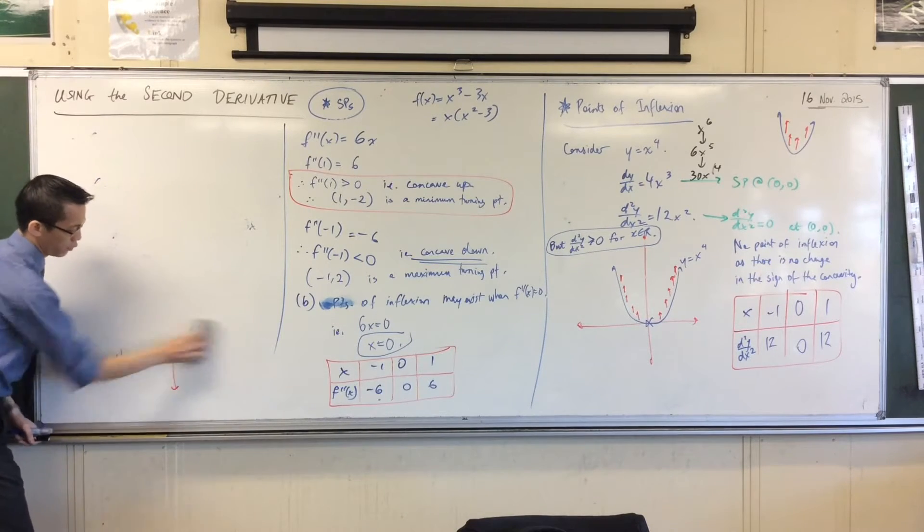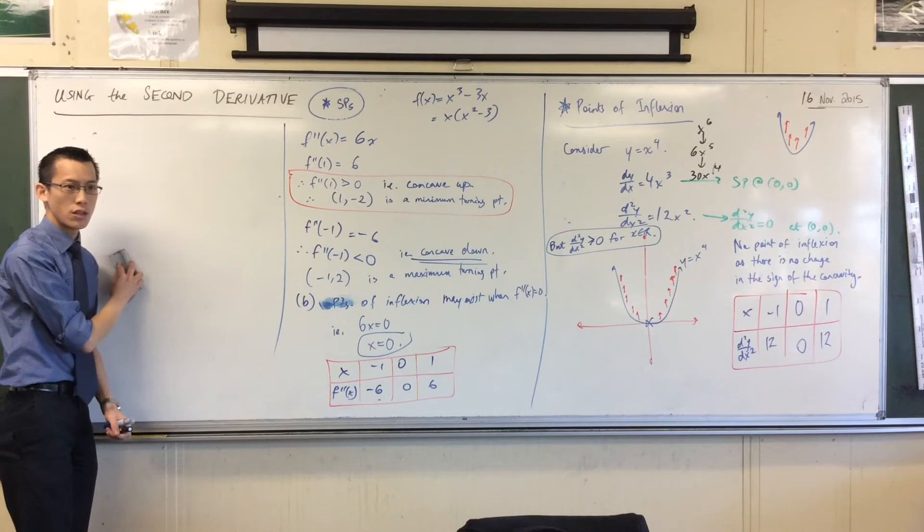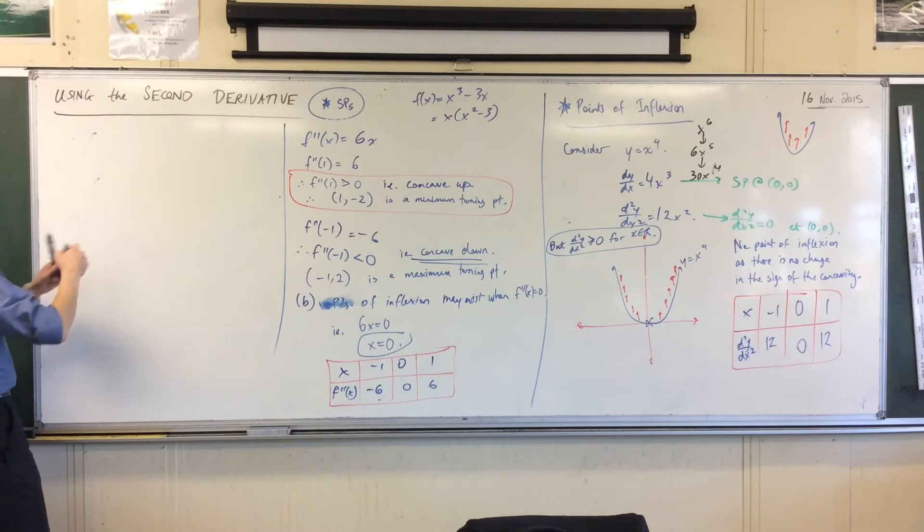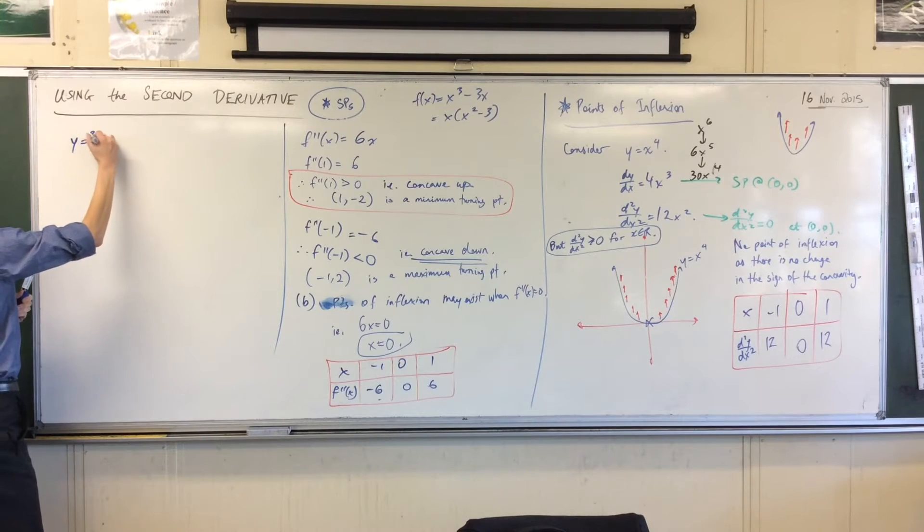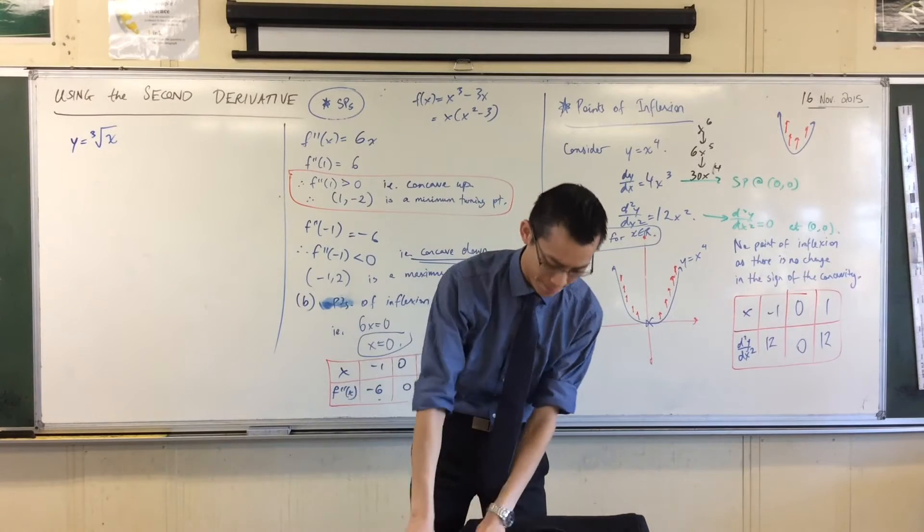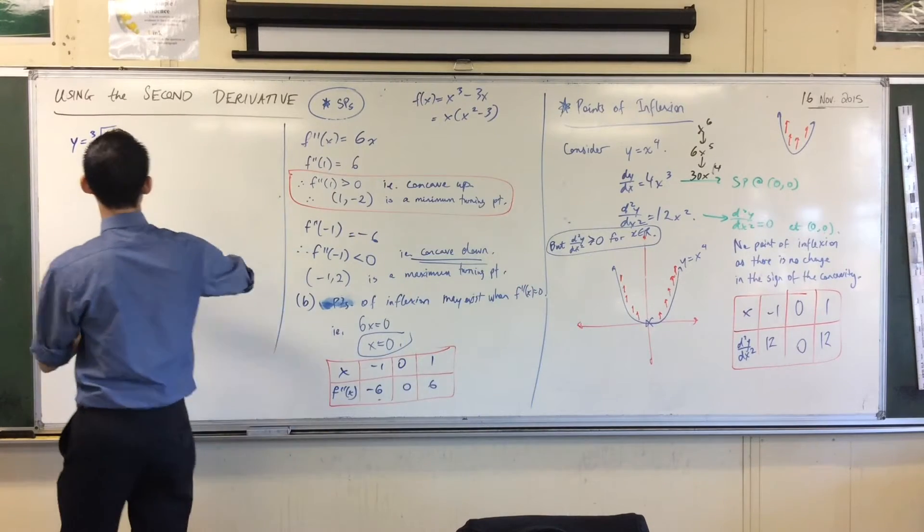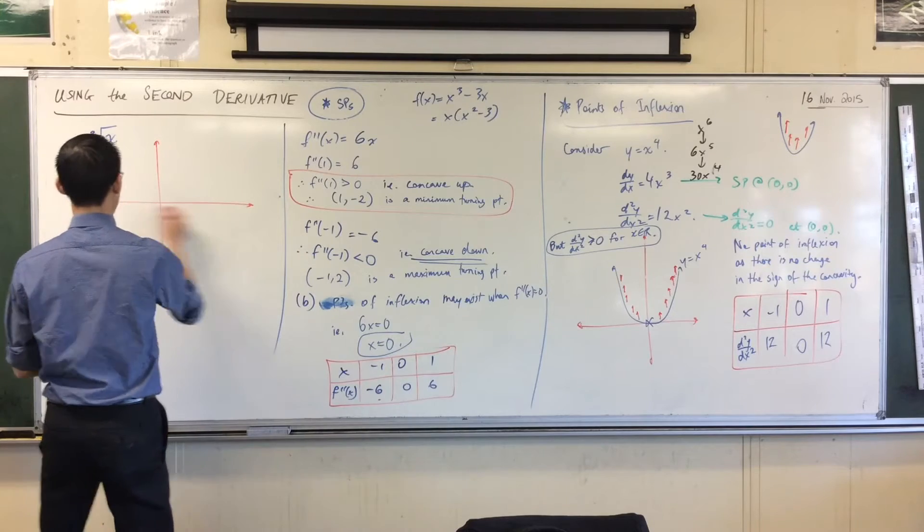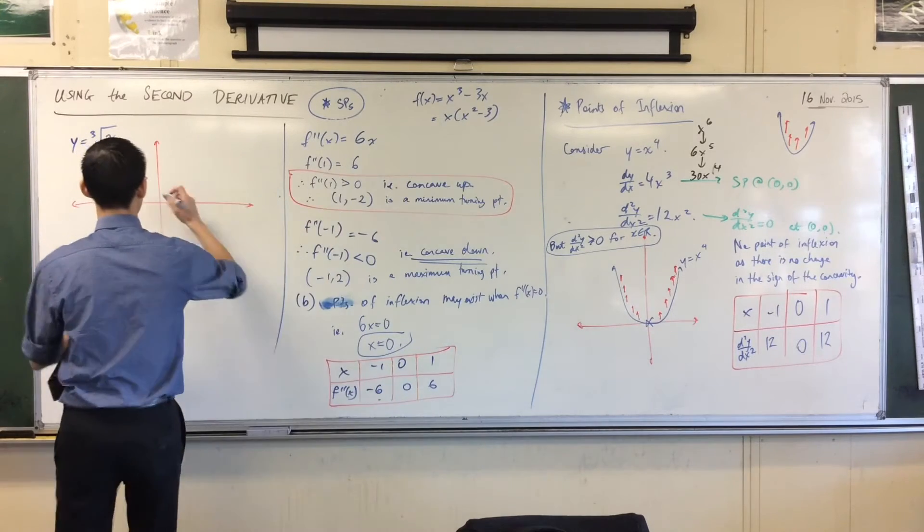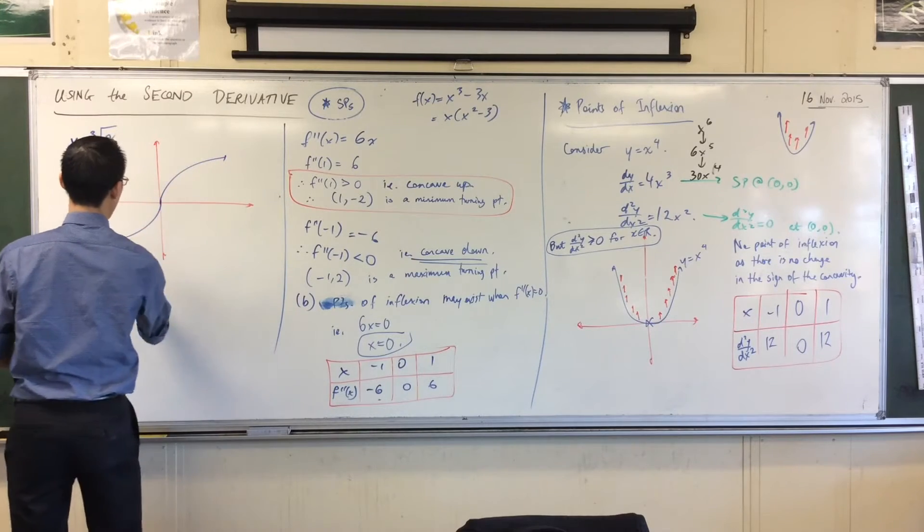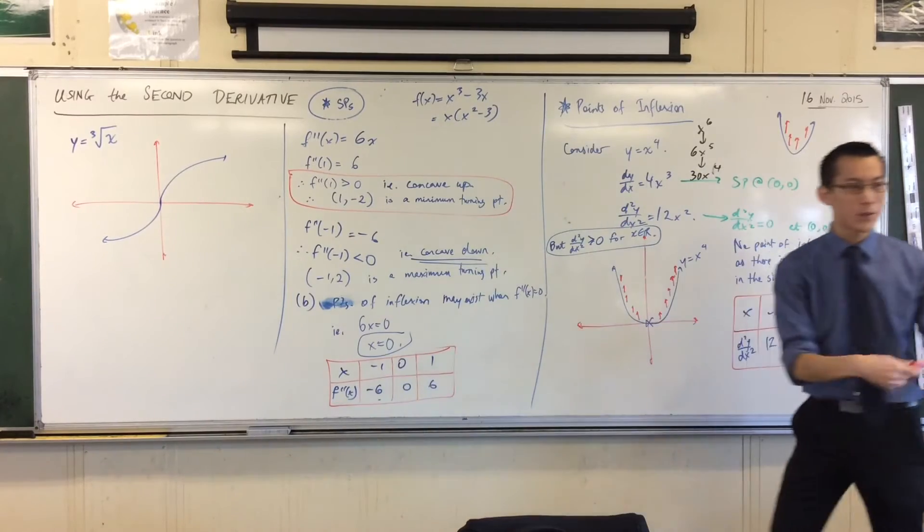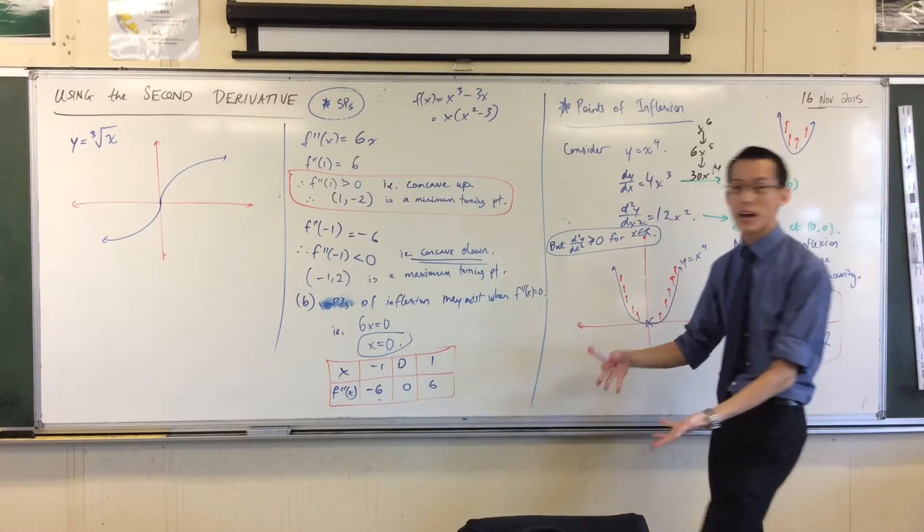You can turn back if you like in your working to where you drew the cube root of x. Remember that guy? You still have it in your books but I don't have it on my whiteboard so I'm just going to quickly redraw it. Now think about the cup and which way it's facing. Just make a geometric argument with me for a second.